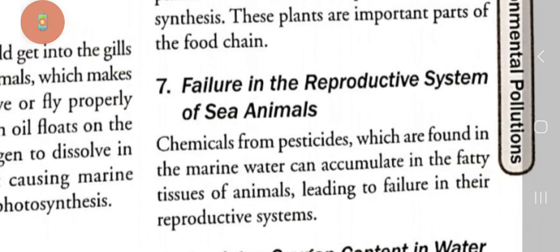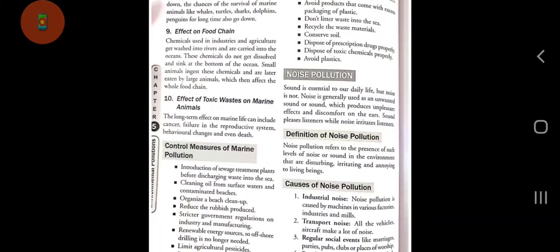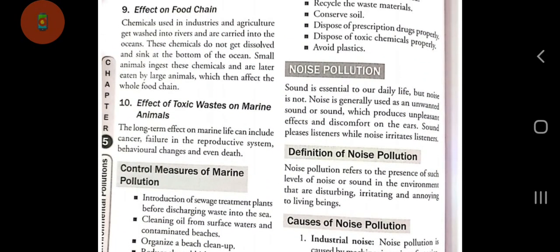Number seven: failure in the reproductive system of sea animals. Chemicals from pesticides found in marine water can accumulate in the fatty tissues of animals, which causes their reproductive system to be affected.